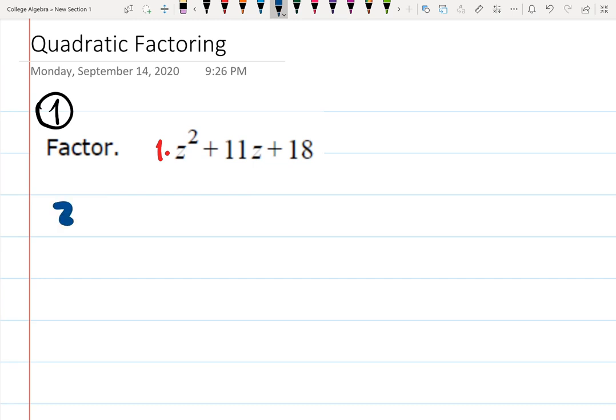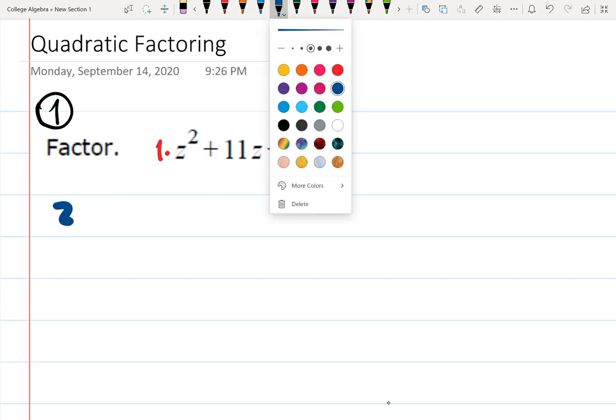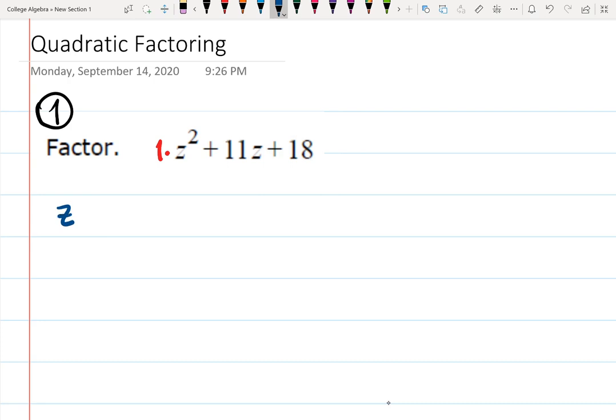And in this fun game, now I know that z1, that's root number 1, plus z2 should give me minus b, so that's minus 11. But when I multiply z1 times z2, that should give me c, that's 18.